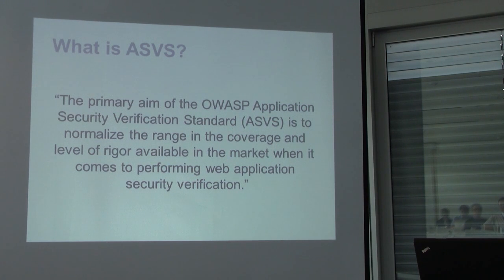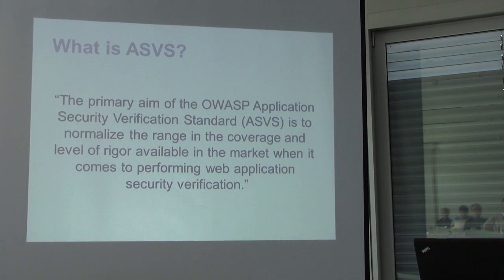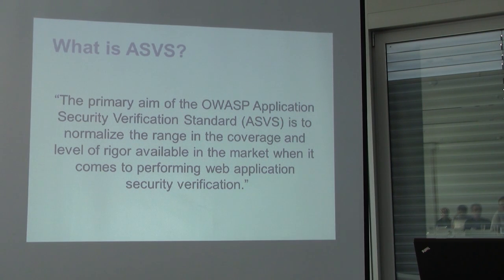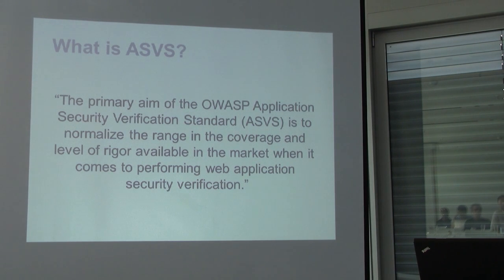A typical use case: say you have a thousand applications — common in large organizations — and you have a mandate to conduct application security. You can't do them all thoroughly end-to-end. You triage them for risk, and based on that, applications at risk level X get a certain type of assessment while higher-risk ones get a more thorough assessment. ASVS defines what that level of assessment is for different types of applications, meant to be used as an industry standard.